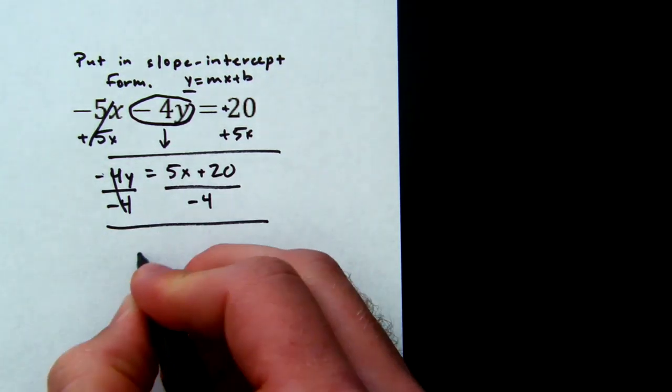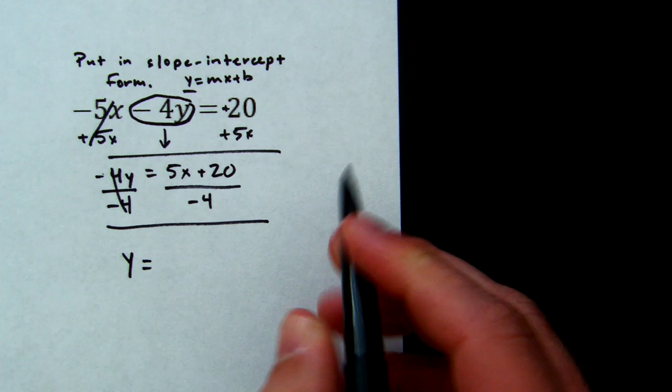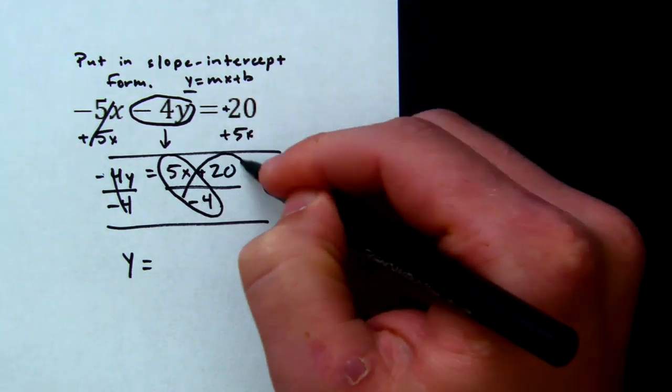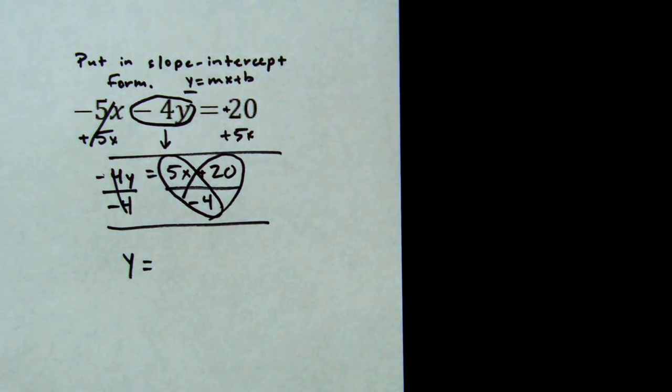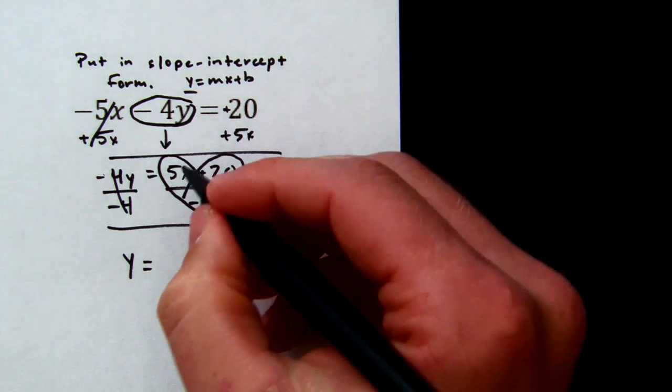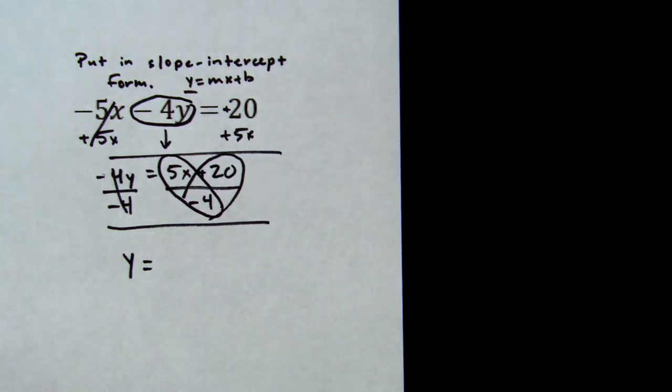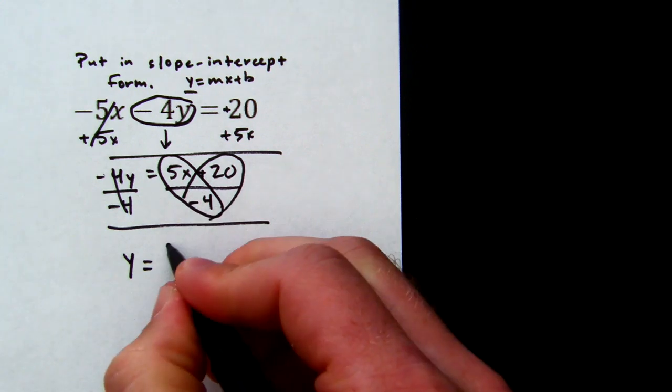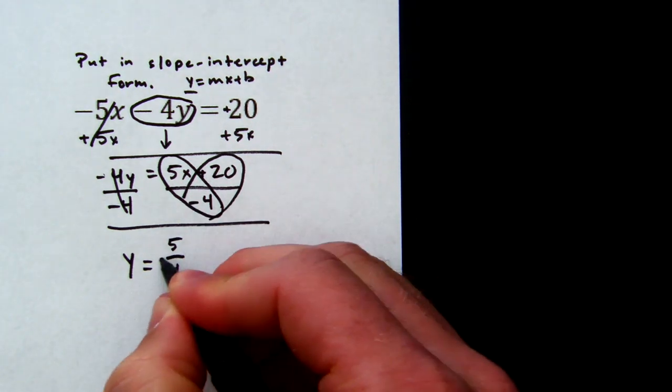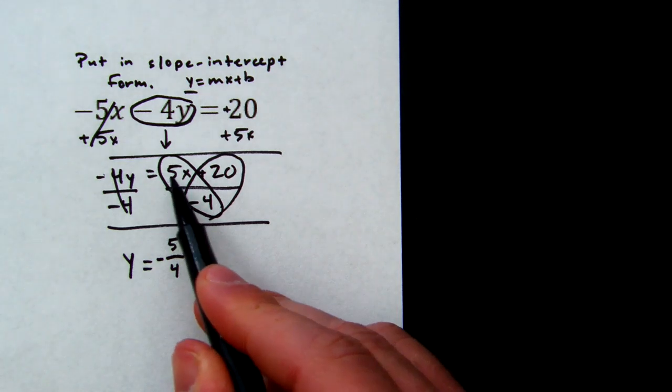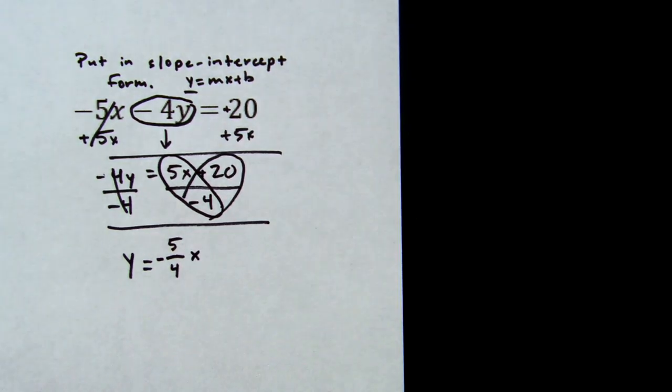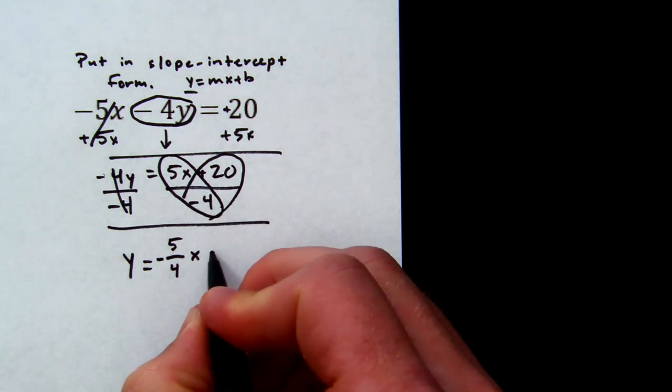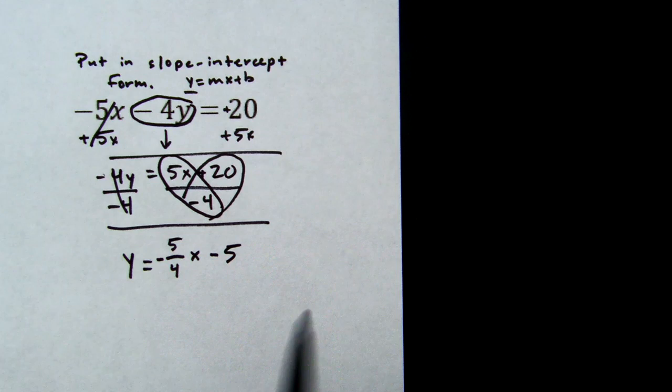The -4s cancel, so we're left with y equals, we're going to divide the -4 by each term on the right side. And we make it hurt because we love math. 5x divided by -4 is not a good number, it will give us a fraction. But what we want to do is just say 5 over 4, and it is going to be negative because we have a positive divided by a negative. Then we attach the x. And plus 20 divided by -4 is going to be -5, so minus 5.